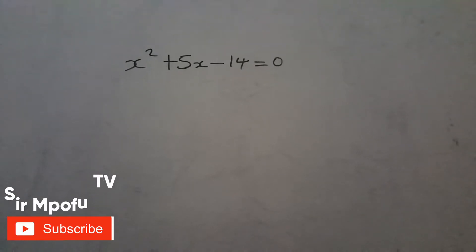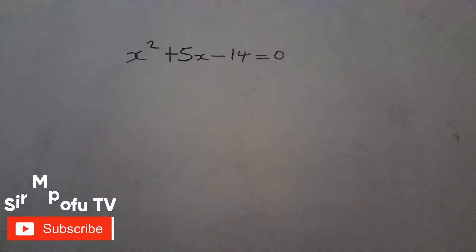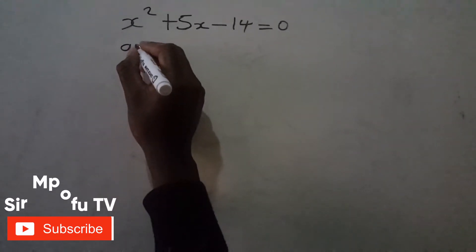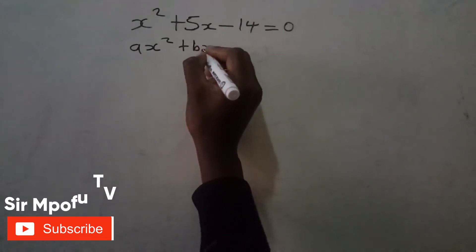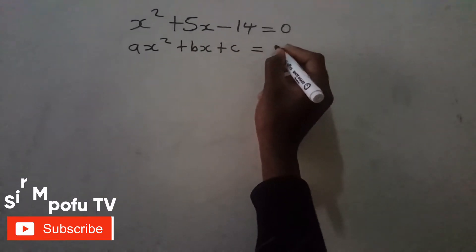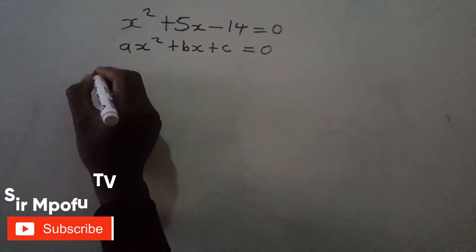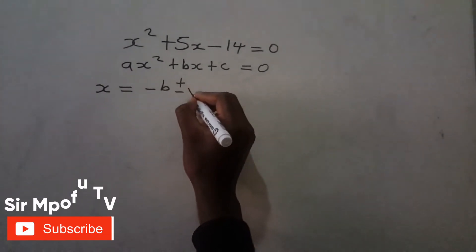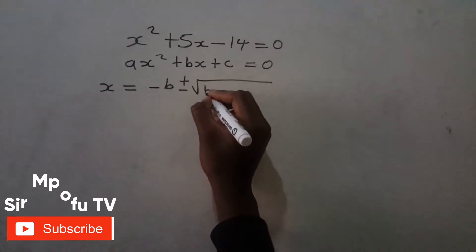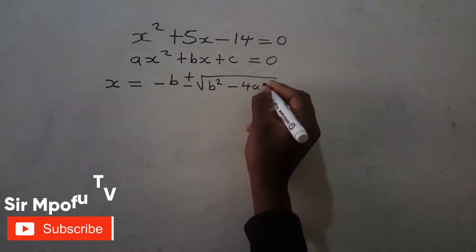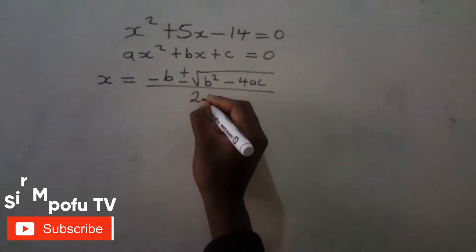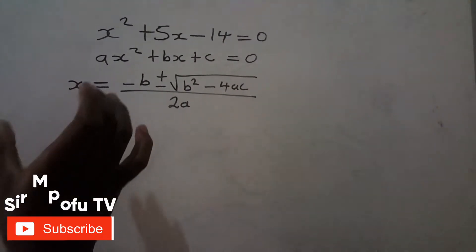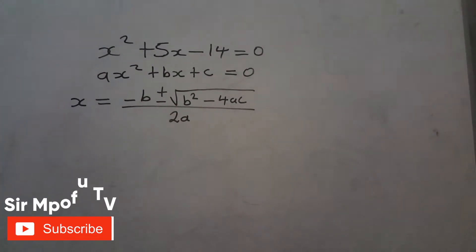The first thing you must know is the quadratic form, and after knowing the quadratic form you must also know the quadratic formula. The quadratic form states that ax squared plus bx plus c is equal to 0, and the quadratic formula is: x equals negative b plus or minus square root of b squared minus 4ac, all over 2a.